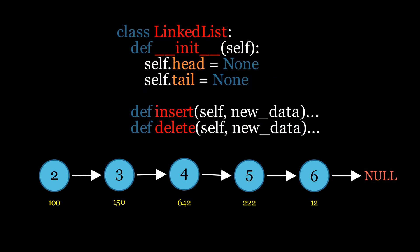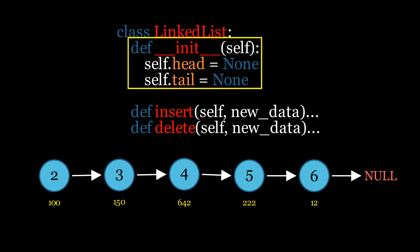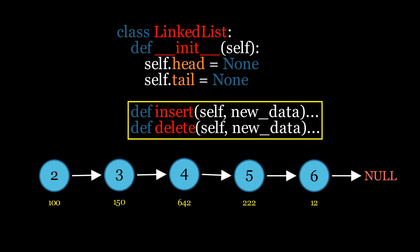Then we will create the class LinkedList. In this class we will define the member variables head and tail to keep track of the first and last nodes of the list. After that we will define the other operations we need to manage our linked list, such as insertion and traversal.